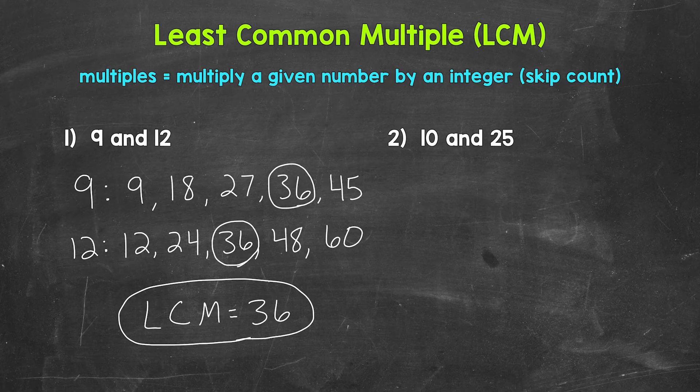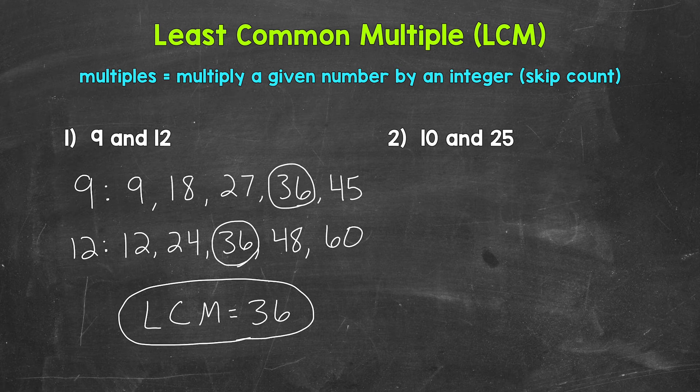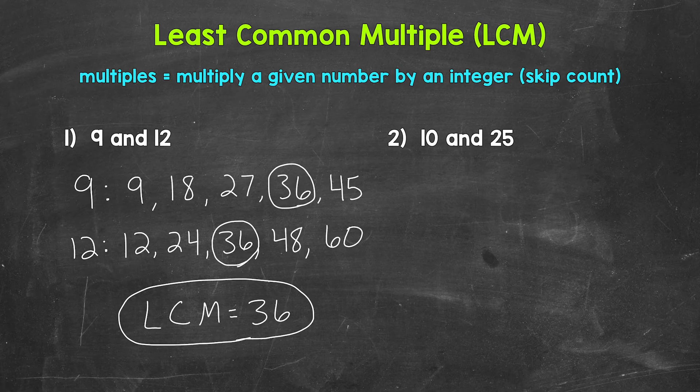Now one thing I do want to mention about common multiples is that they are infinite. Although we only have one common multiple in our lists as is, 36, we can always extend multiples lists. So we can always keep going to find more common multiples. Remember, multiples are endless. So that means common multiples are endless. So that's just something to think about when it comes to multiples.